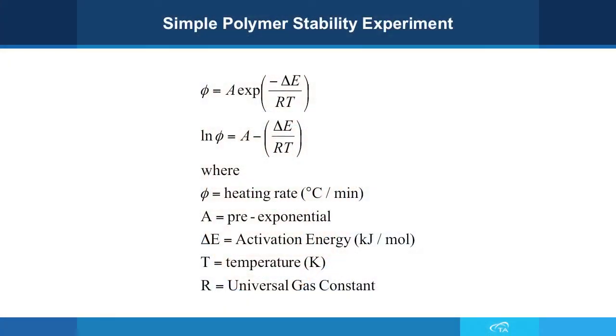This TA tech tip is on how to use your TGA to get some very simple basic kinetics data and compare the relative stability of two things. It could be polymers, it could be compounds, it could be anything that you want to know the relative stability of each of these.